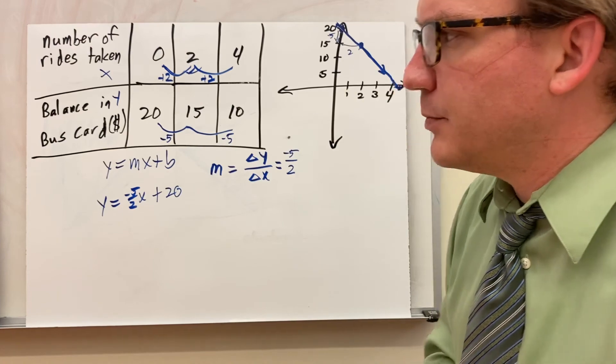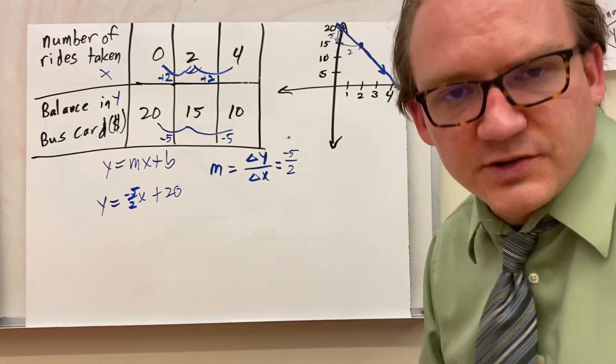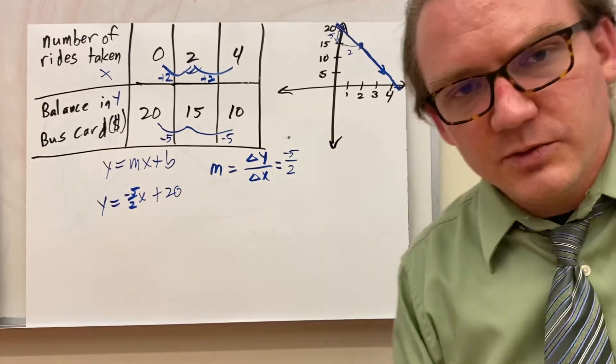Again, this is how I can write and graph non-proportional relationships using slope-intercept form, which we write y equals mx plus b.